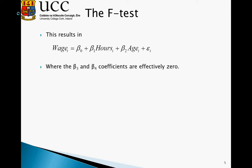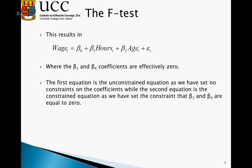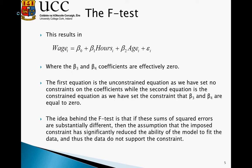Beta 3 and beta 4 are effectively 0 and drop out of our constrained model. The first equation is the unconstrained equation, as we've set no constraints on the coefficients, while the second equation is the constrained equation, as we've set the constraint that beta 3 and beta 4 are equal to 0. The idea behind the F-test is that if the sum of squared errors are substantially different, then the assumption imposed by the constraint has significantly reduced the ability of the model to fit the data, and thus the data does not support the constraint.